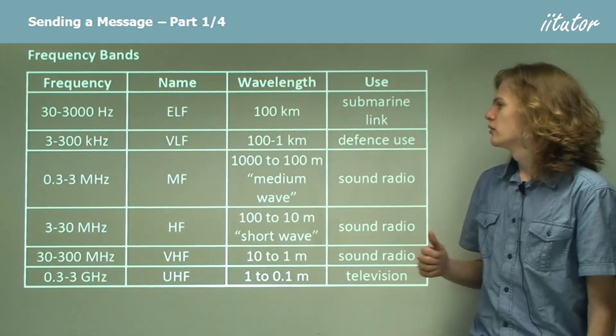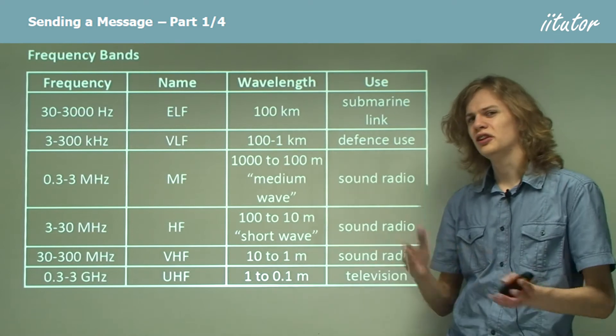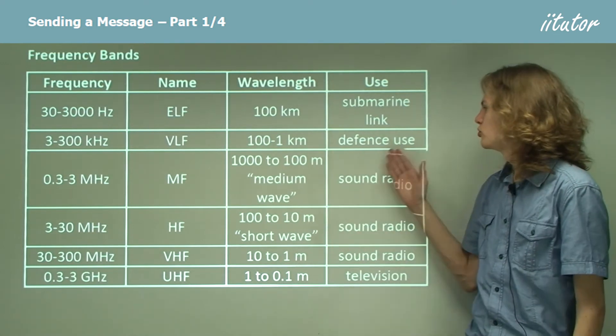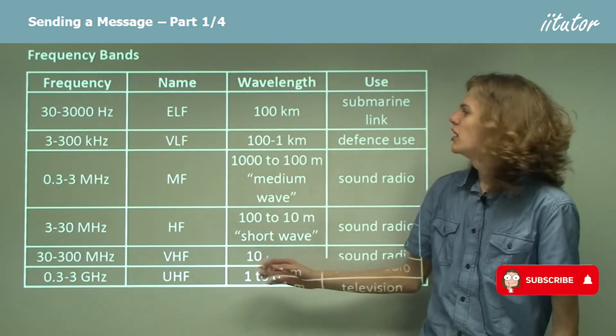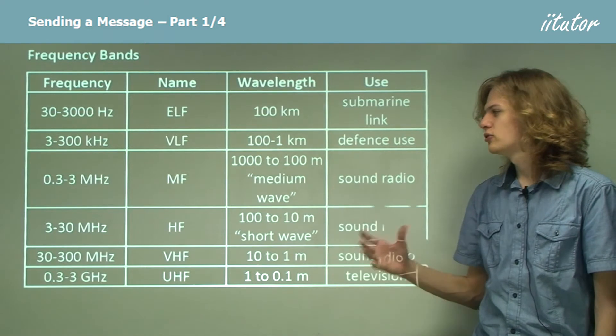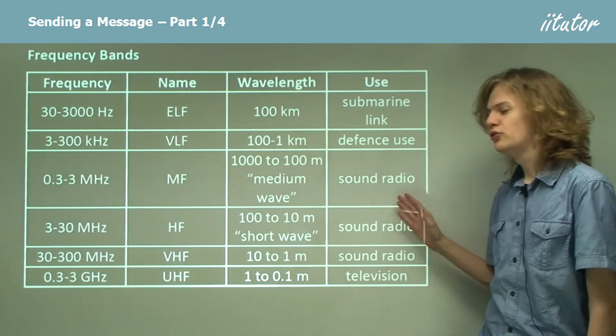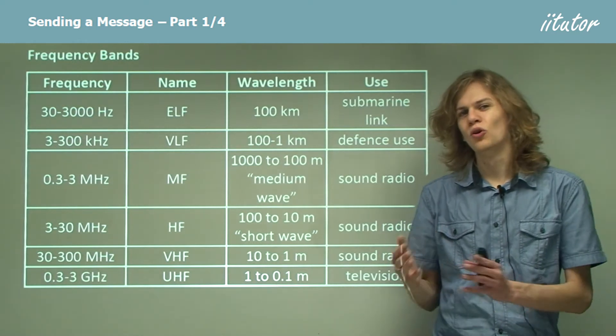If we look at very low frequency waves, which have potentially a much shorter wavelength, this is often used by the military. If we look at medium wave, that is medium frequency, that ranges from about 300 kilohertz to 3 megahertz. That's used for sound radio, in particular AM radio.